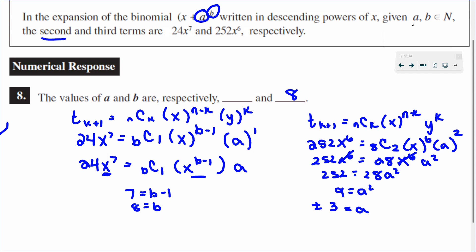In the original equation, we saw that a and b were natural numbers. So that means a can't be negative, that's an integer. It has to be positive. So now I know that a is 3, and b is 8.